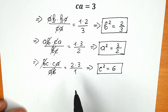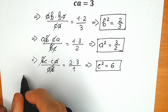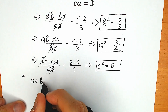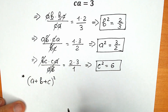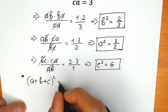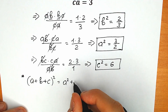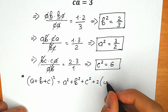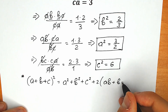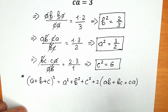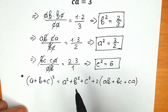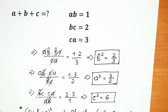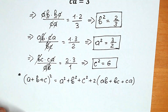Next, we need a really important algebra formula: (a plus b plus c) squared equals a squared plus b squared plus c squared plus 2 times (ab plus bc plus ca). If you look closely, we know everything — a squared, b squared, c squared, and the values of ab, bc, and ca.